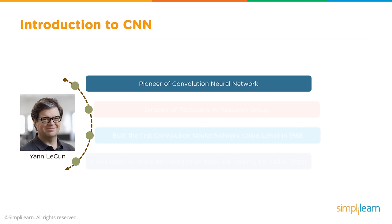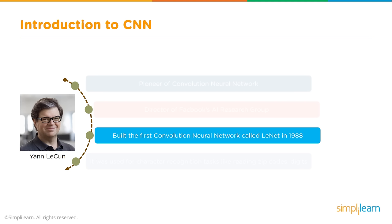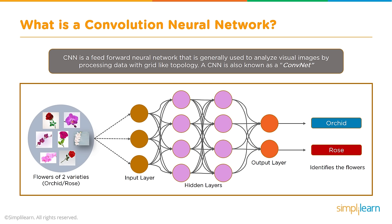We'll begin our introduction to the CNN by introducing the pioneer of convolutional neural networks, Yann LeCun. He was the director of Facebook AI Research Group and built the first convolutional neural network called LeNet in 1988. It was used for character recognition tasks like reading zip code digits. CNN is a feed-forward neural network generally used to analyze visual images by producing data with a grid-like topology.